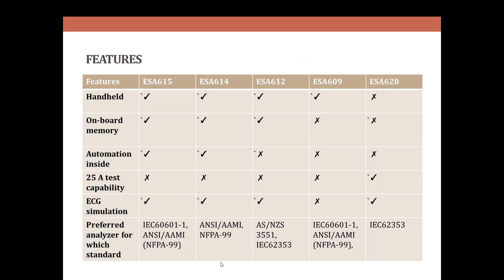For features, there are many types in the safety analyzer like ESA 615, ESA 614, 612, 609, and 620. These types have many features like handheld type, onboard memory, automation inside, 25A test capability, ECG simulation, and preferred analyzer for which standard, so it measures the standards.